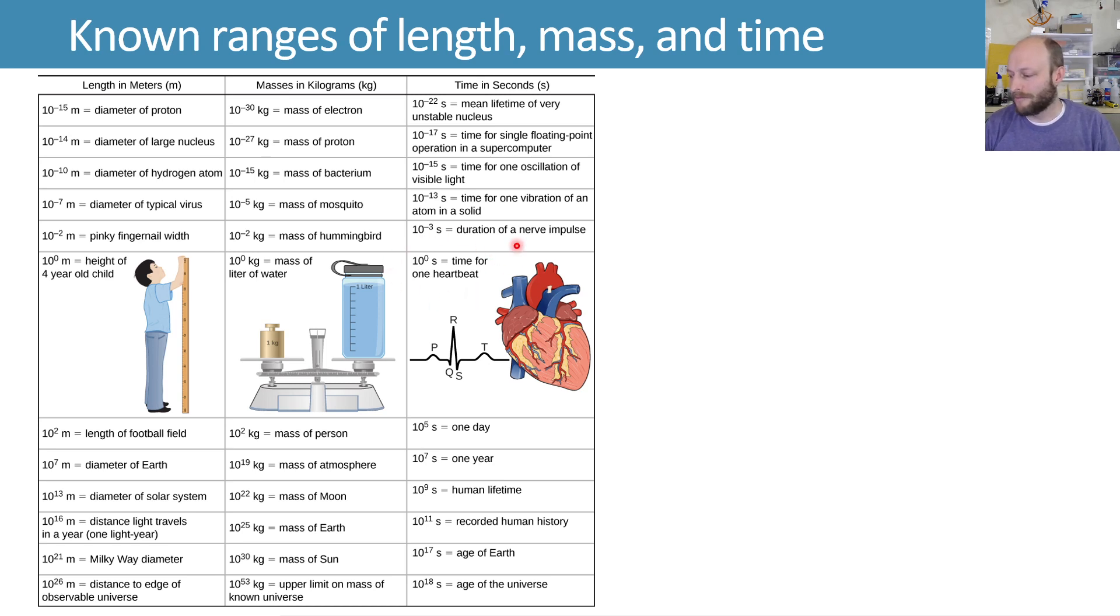For example, a heartbeat takes about a second or 10 to the 0 seconds. If you're a long-distance runner, maybe your heart beats a little bit slower, but it's probably not 10 seconds between heartbeats. It's probably still closer to a second, so it's on the order of 10 to the 0 or order unity.